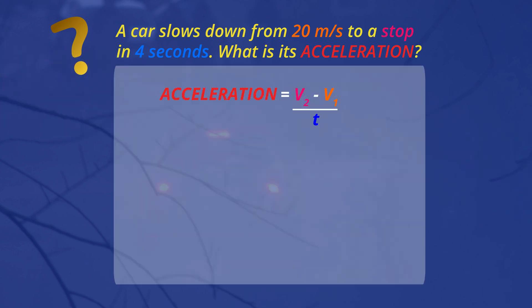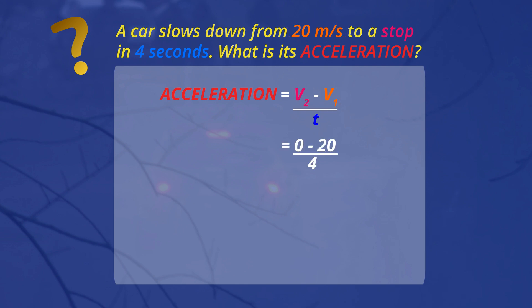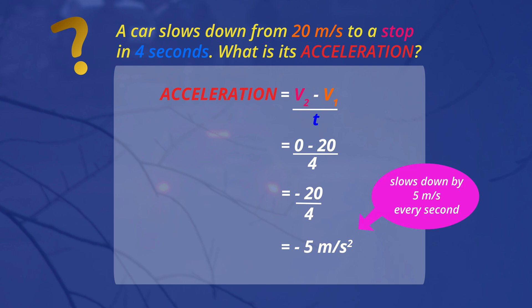In this example V2, that's the second velocity, is zero, and V1, the first velocity, is 20 metres per second. So zero minus 20 is divided by 4 seconds it takes to slow down. That's negative 20 divided by 4, so the acceleration is negative 5 metres per second squared. That means the car is slowing down by 5 metres per second for every second that it travels — slowing down by about 18 kilometres per hour every second, so about enough to avoid an accident in a slow school zone.